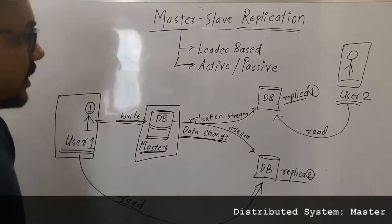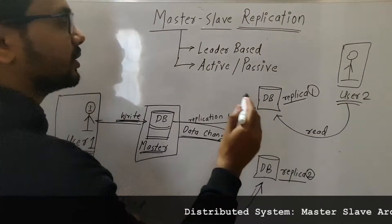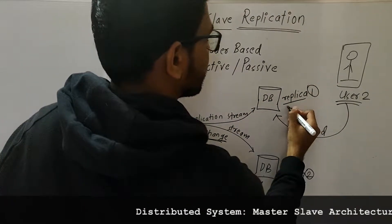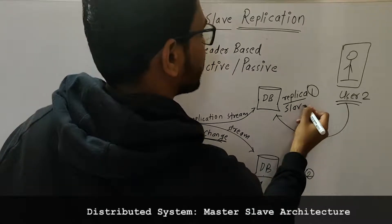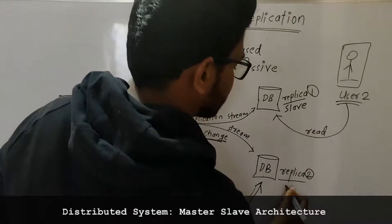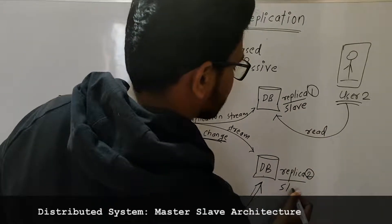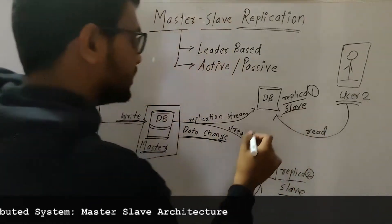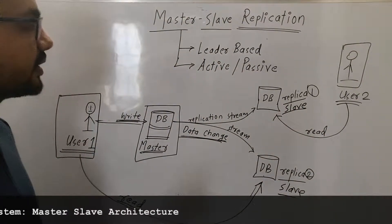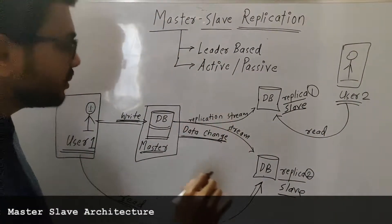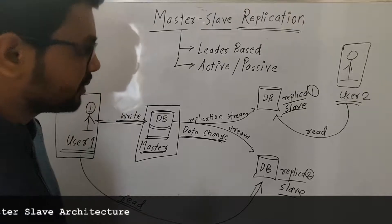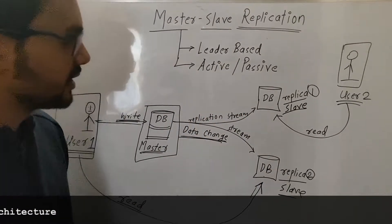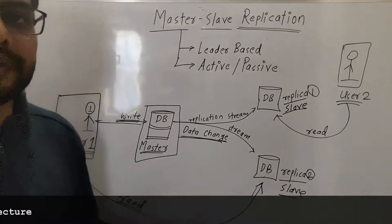These replicas are also called slaves. In this diagram I have given only two replicas, but remember, in practical work there can be multiple replicas — 20, 50, 100.